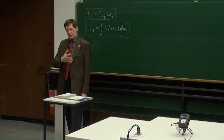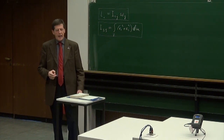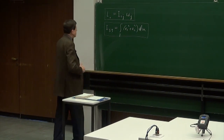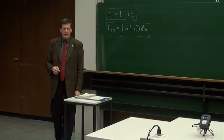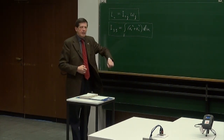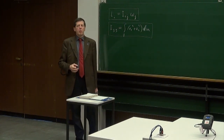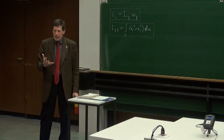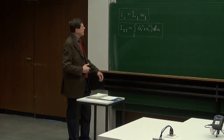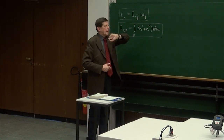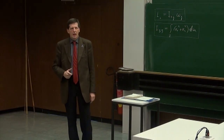Mit einem einfachen Skalar geht das nicht, weil wenn man zwei Vektoren durch einen Skalar nur miteinander verknüpft, sind die immer parallel zueinander. Aber in dem Fall ist eben der Drehimpuls und die Winkelgeschwindigkeit nicht stets parallel zueinander. Was man dann herausbekommt – und das hatten wir letzten Donnerstag gemeinsam an der Tafel erarbeitet – ist eine Beziehung, die wir in einfacher Kurzschreibweise so aufgeschrieben haben: die i-te Komponente des Drehimpulsvektors lässt sich darstellen als IIJ mal der j-ten Komponente des Winkelgeschwindigkeitsvektors. Wobei bei einer solchen Beziehung, wo zweimal der gleiche Index vorkommt, über diesen Index von 1 bis zur Dimensionszahl zu summieren ist.